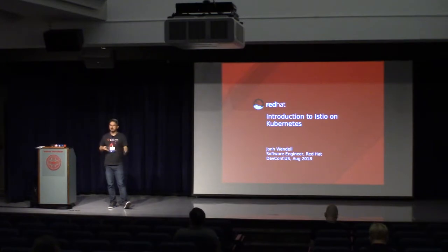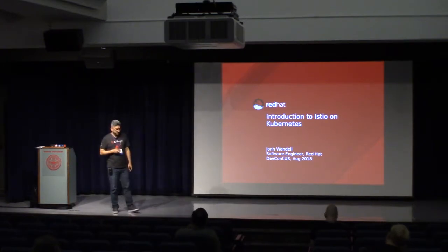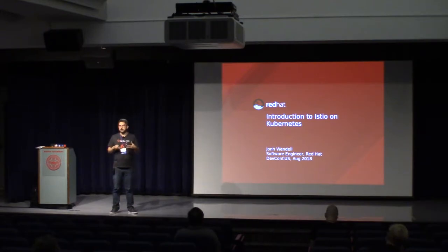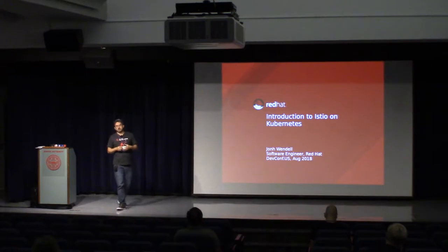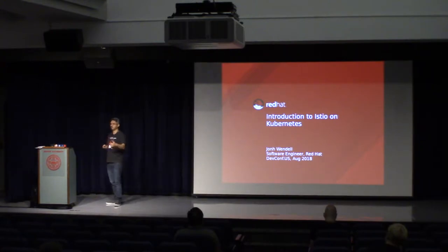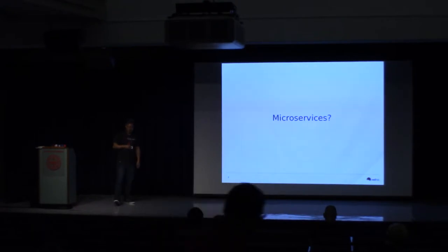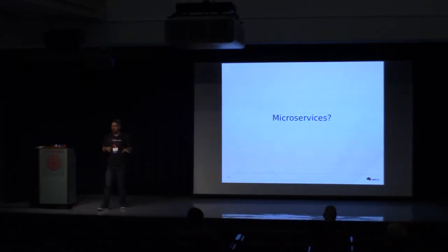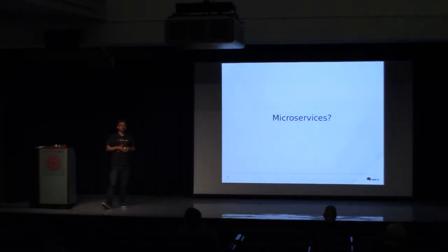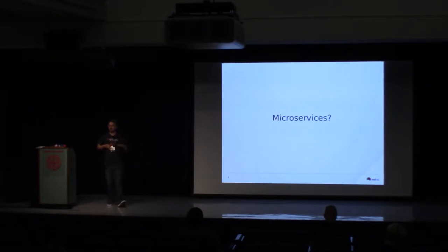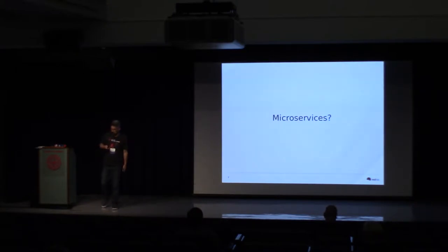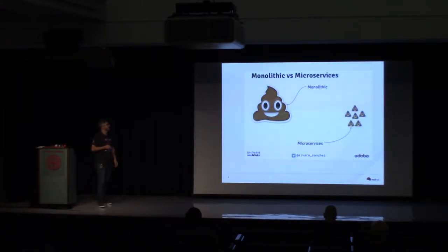Today I'm going to give you an introduction on Istio — what Istio is and what problems it tries to solve. Istio is not tied to Kubernetes, but for the sake of this talk I'm going to talk about Istio on Kubernetes. Istio is really close to microservices, so the focus of this talk is about Istio trying to fix some problems with microservices on top of Kubernetes. I'm not going to go deep into microservices, but we should have an overview of microservices to understand how Istio can help.